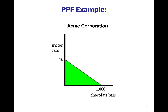This company can use their resources to make motor cars or chocolate bars. If they use all of their resources to make motor cars — every single laborer and every piece of equipment — they can make 10 motor cars, but then zero chocolate bars. Alternatively, if you used all of your resources to make chocolate bars, you can make a thousand of them, but then you have no resources left over to make motor cars.